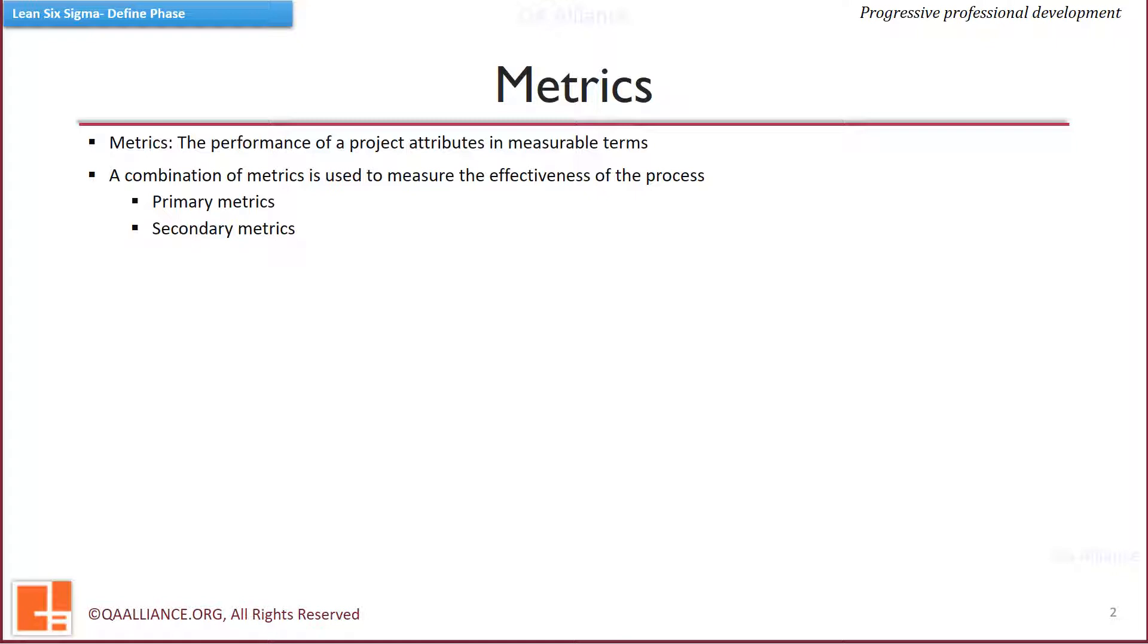In previous lessons, we have seen the y and x and also that there is a link between the two. We will see in the next slide, what are the primary and secondary metrics and how they link to these y and x's. Putting a metrics system in place helps to control both the process and the output.